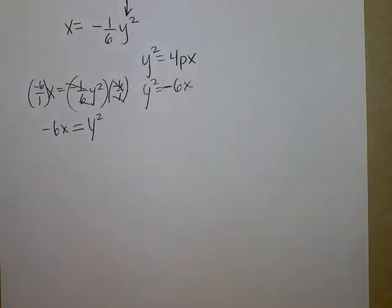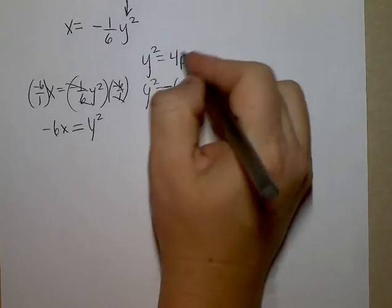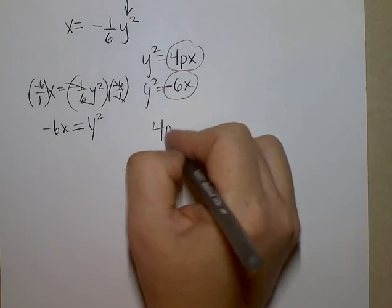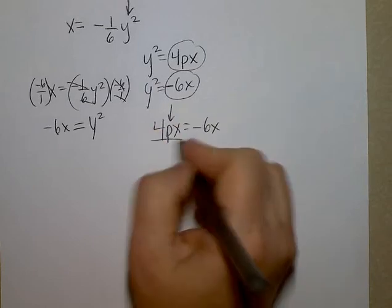So I rewrite it as y squared equals negative 6x. This is all part of step 1. When the y squareds are equal, I get to set these two quantities equal to one another. And my goal is to solve for p. So to get p by itself, I divide by 4x.